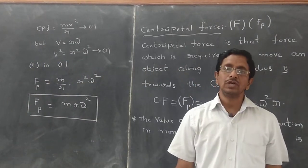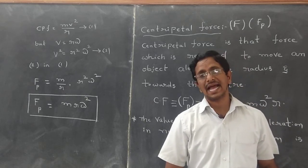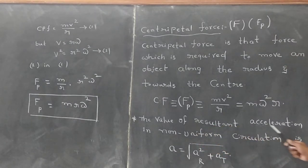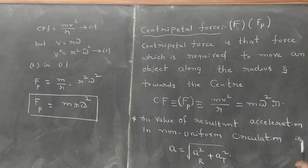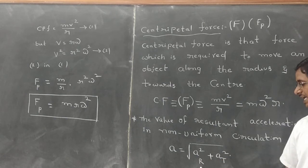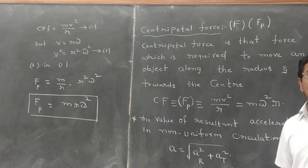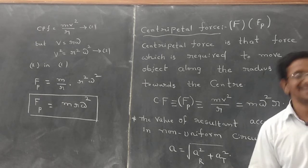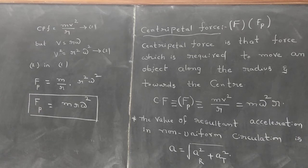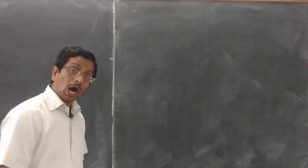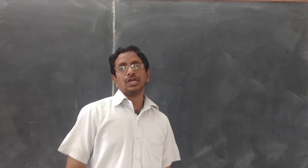Now I would like to explain resultant acceleration. What is resultant acceleration? The resultant acceleration in non-uniform circular motion is given by A equals the square root of A_R squared plus A_T squared. Now I can derive this one also on the board.